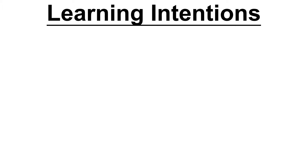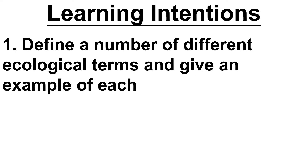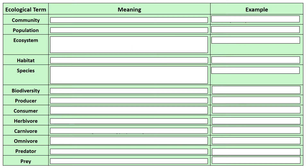This is the first topic of Unit 3 of National 5 Biology. We're going to look at some different ecological terms. A lot of them you'll be familiar with from general knowledge and from being in school before. So some of them, certainly the first lesson, will just be a case of re-familiarising yourself, and there may be some new things in here as well.